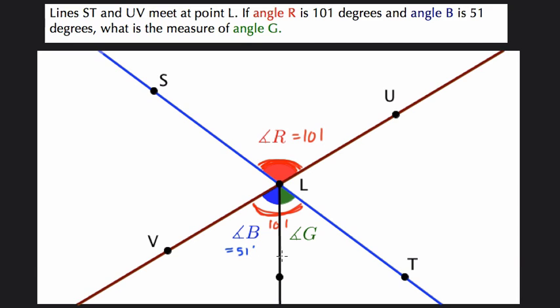B is already 51 degrees. So then G has to equal what? Well, it has to equal the total of 101 degrees minus 51, and that is just 50 degrees. So angle G is 50 degrees.